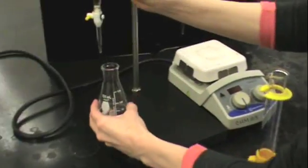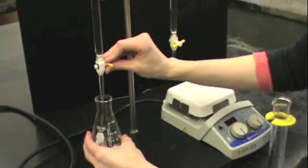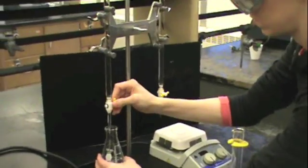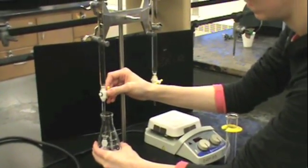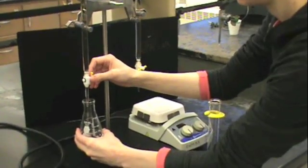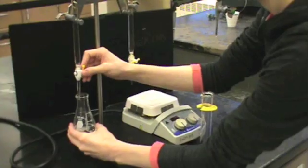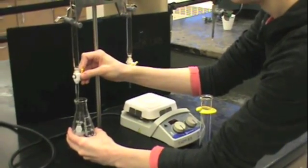Then using your burette, add a known quantity of the unknown you are trying to titrate. Make sure that you read your burette accurately to two decimal places so that you have the most accurate possible volume of your unknown.